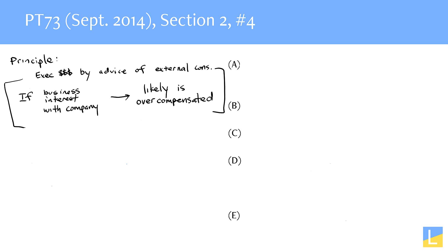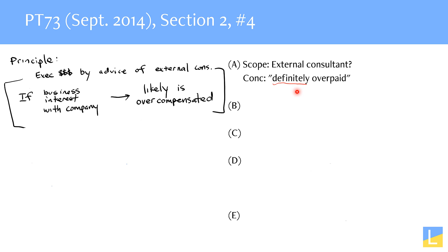So let's take a look. Answer choice A should be out pretty quickly because the conclusion says the president's definitely overpaid. But the stimulus's principle only allowed us to conclude that the executive was likely to be overpaid. So answer choice A's conclusion is too strong. And in any case, where's the external consultant? Answer choice A is not even about the situation that we're talking about.